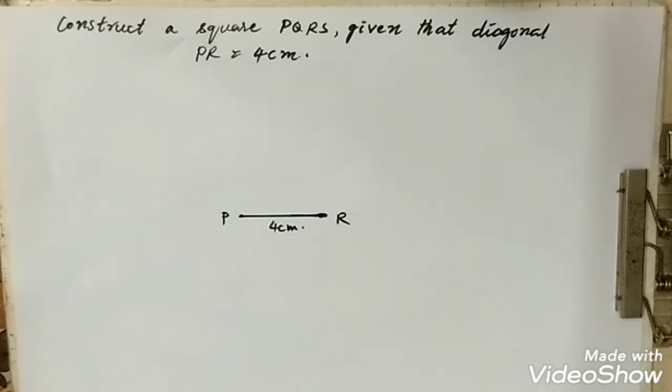Hi students, welcome to the Pace Academy. This time we are going to show you the 8th standard ICSE mathematics syllabus, in which we are going to construct a square PQRS given that the diagonal PR is equal to 4 centimeters.